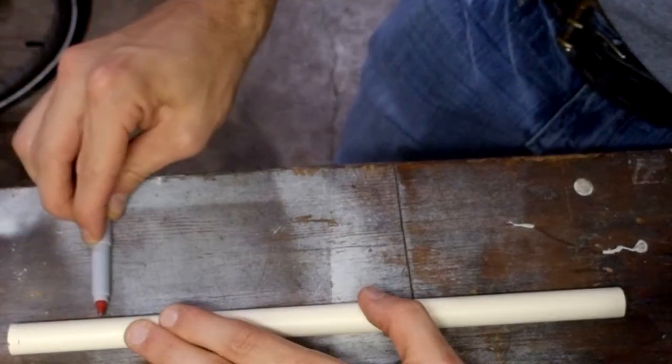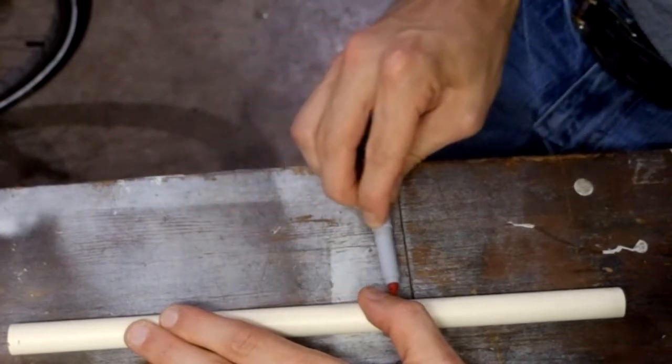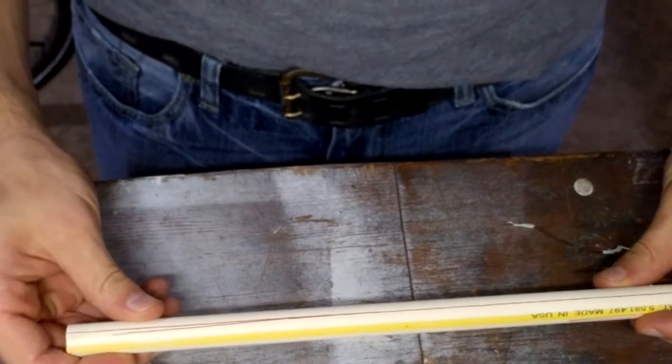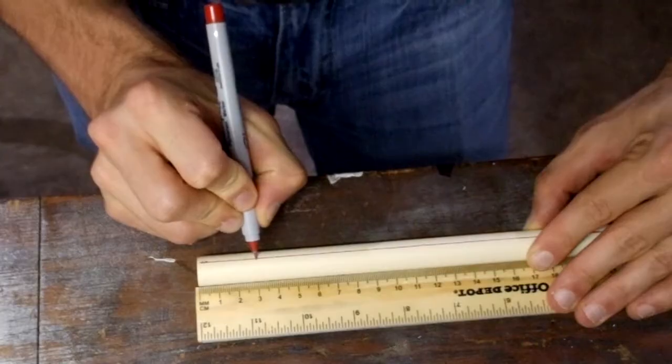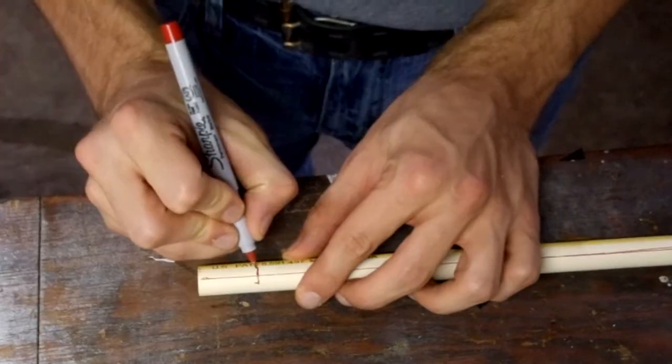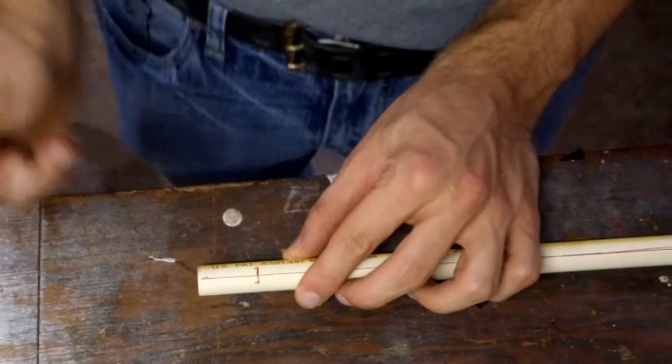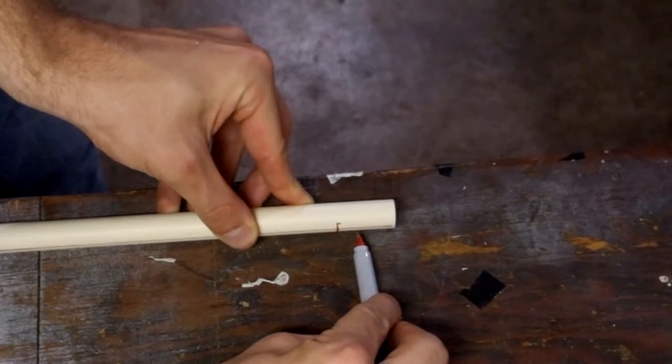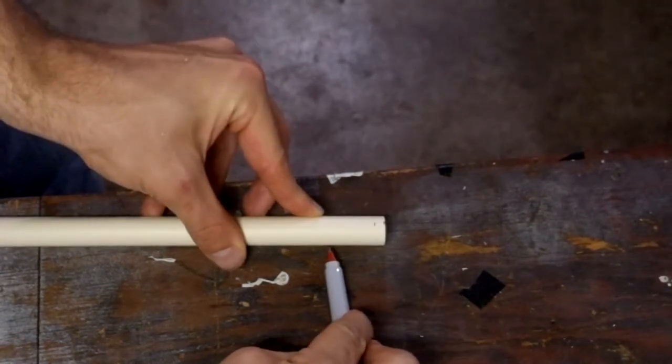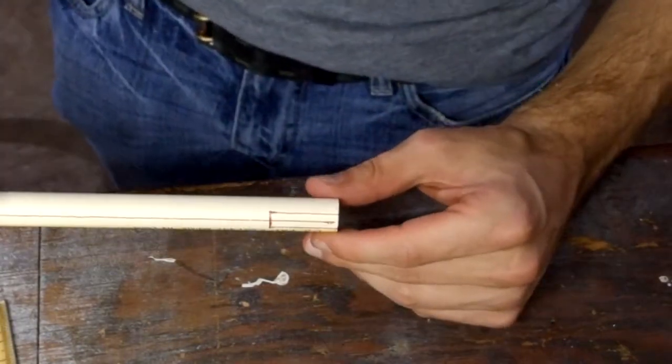Now I'm going to draw a straight line down one side of the pipe. This will act as a guide. Next place a mark 3 cm from one end of the pipe. Then place two small marks about 3-4 mm on either side of the line. Now draw two more straight lines from those marks to the edge of the pipe.